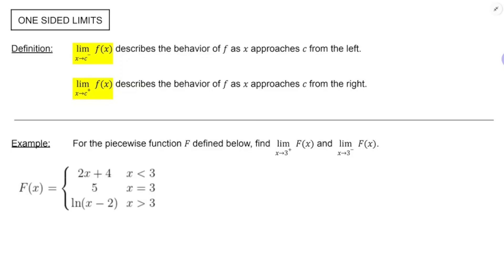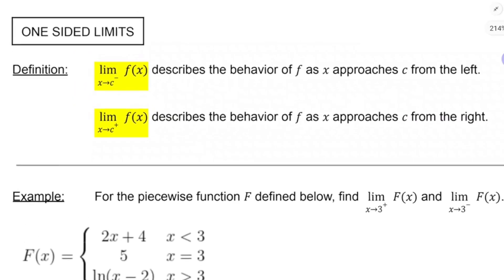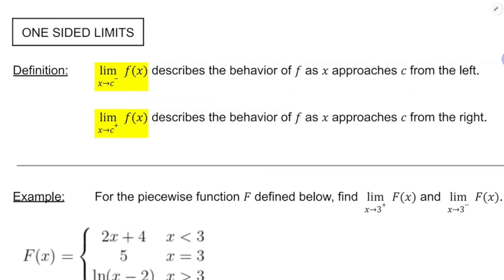On the topic of one-sided limits — it's hard to put a rigorous definition at the AP Calculus level since we don't get into epsilons and deltas. We're really concerned with concept here. As x approaches some number from the negative side, that describes behavior from the left. And as x approaches c from the positive side, we're talking about behavior from the right-hand side.